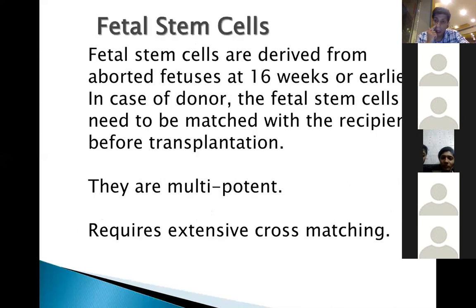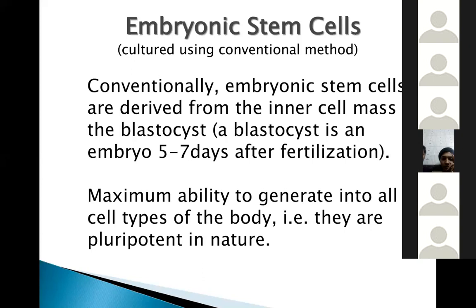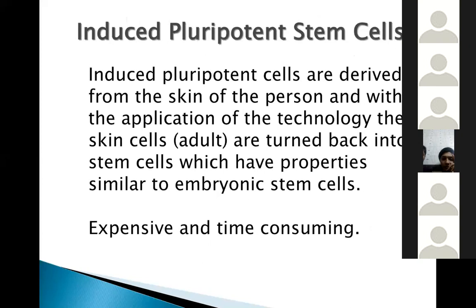Fetal stem cells are derived from aborted fetuses at 16 weeks and must be cross-matched; they are multipotent. Embryonic stem cells are derived from the inner cell mass of a blastocyst, but other sources include the morula, blastomere, and primordial cells. These cells have maximum ability to generate into all cell types — they are pluripotent. Induced pluripotent stem cells have already been explained; the drawback is that they are very expensive — around $500,000 to $1 million per patient — and time-consuming, taking six to nine months. However, they hold the most promise and receive significant research grants.